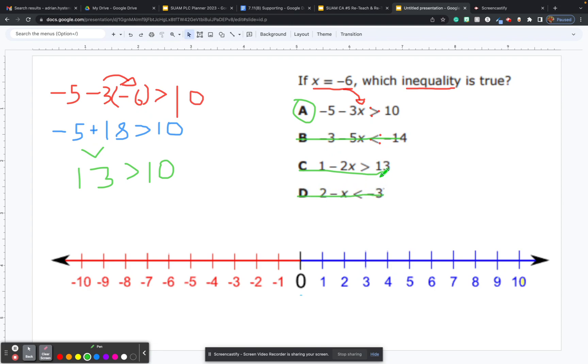To keep the video short, I'm going to stay focused on what we have. We proved that it was true. If x is negative 6, this inequality would be true. That means the solution to this problem is that x can be negative 6. I'm going to put a dot at where it's negative 6.